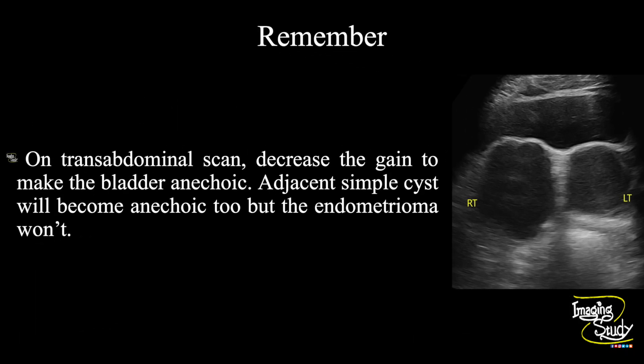Now the take-home message. Transvaginal ultrasound is quite easy to use to see and diagnose endometrioma. But on transabdominal ultrasound, if you face confusion, just decrease the gain to make the urinary bladder anechoic. If there is any adjacent simple cyst, they will become anechoic too — but the endometrioma won't. It will remain homogenously hypoechoic.